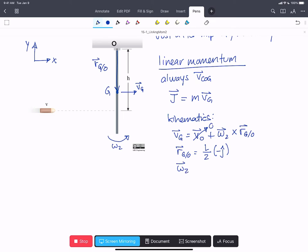And then omega 2, the rod's going to turn in the positive K hat direction, omega 2 positive K hat.